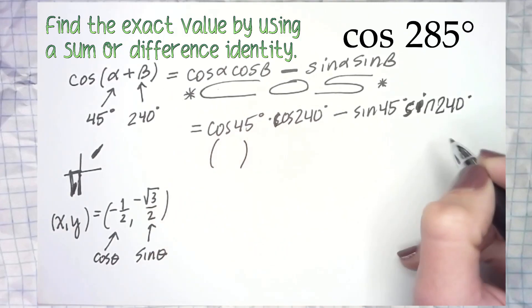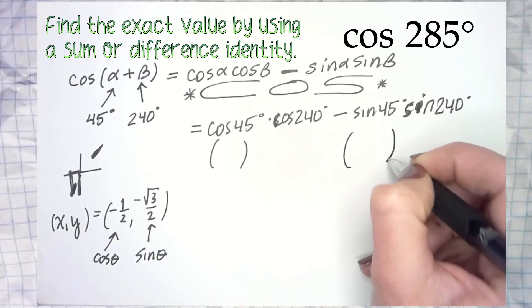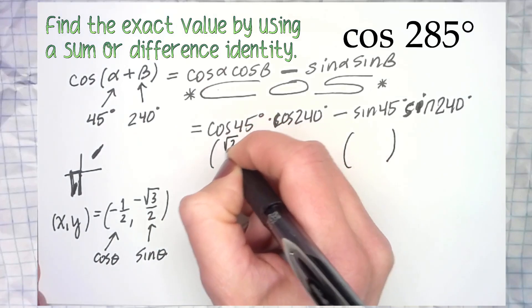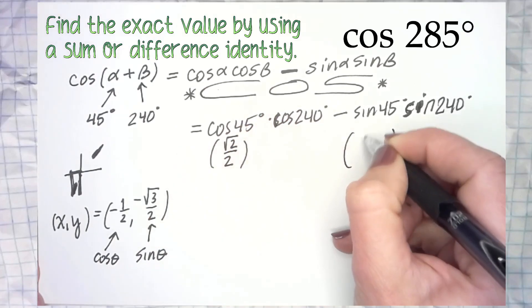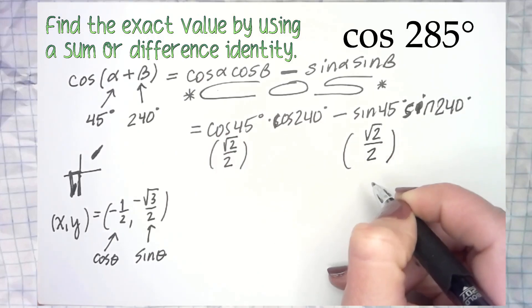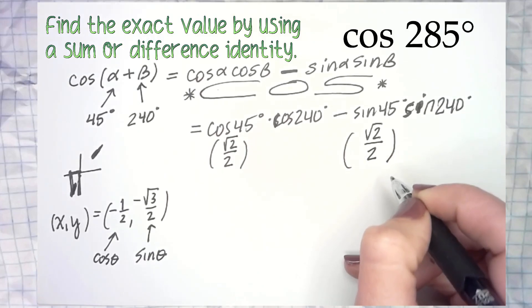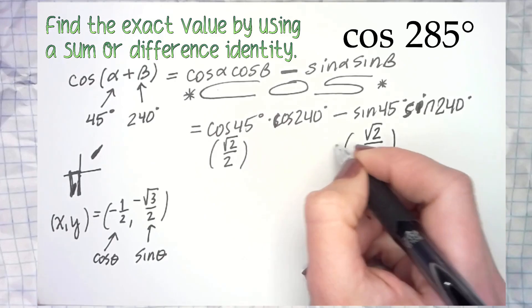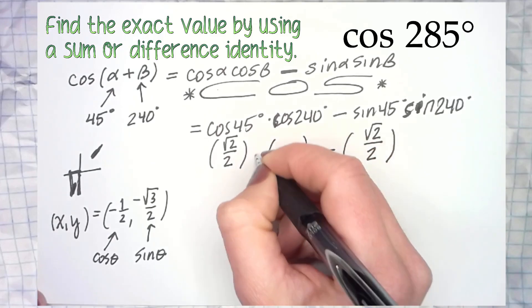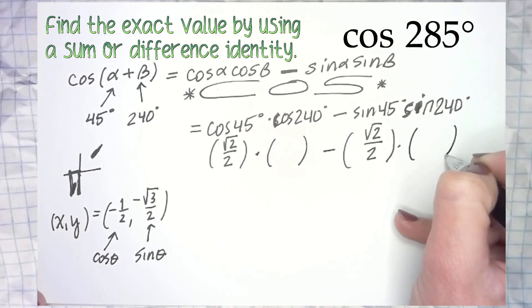In the next step, you don't have to write sine or cosine anymore. In fact, you should not write sine or cosine anymore. We are evaluating the cosine and sine of 45 degrees, and the answer is root 2 over 2. So we're good. Here's my minus sign. Cosine 240 will go right there, and sine of 240 will go right there.